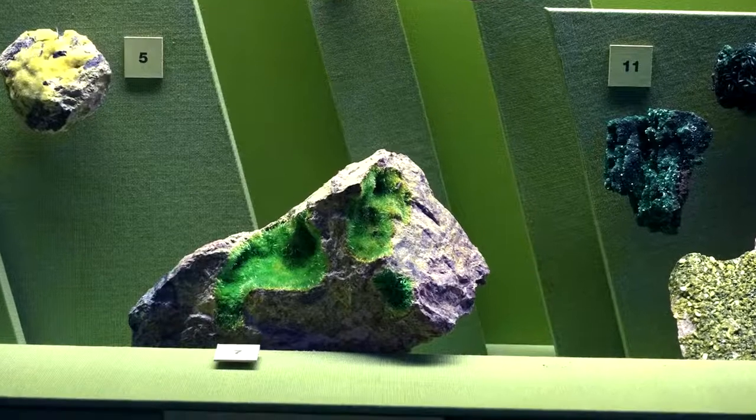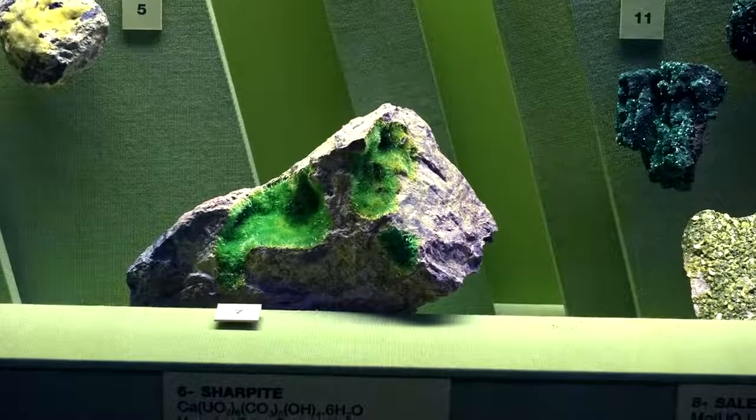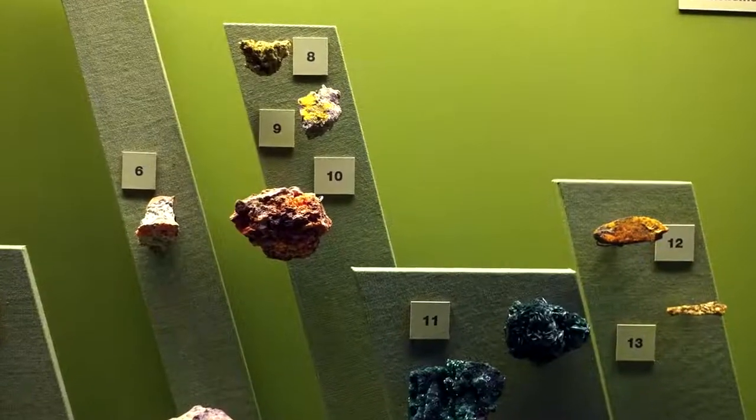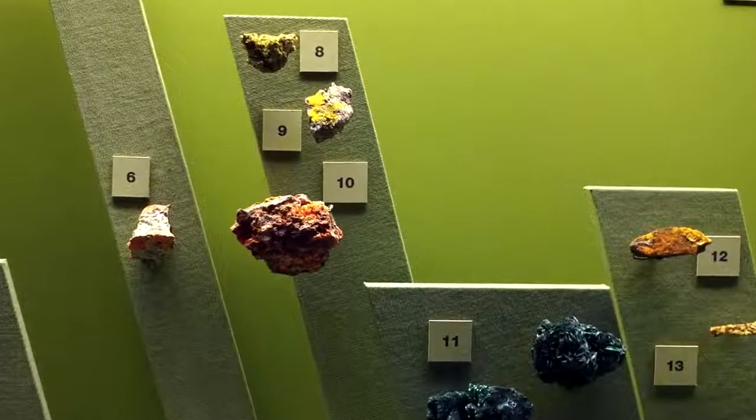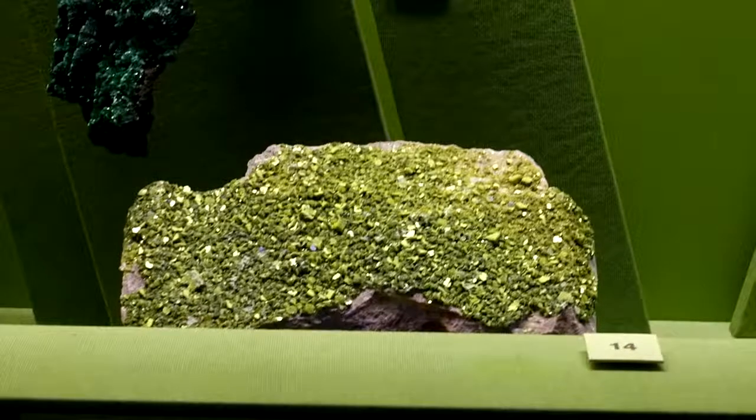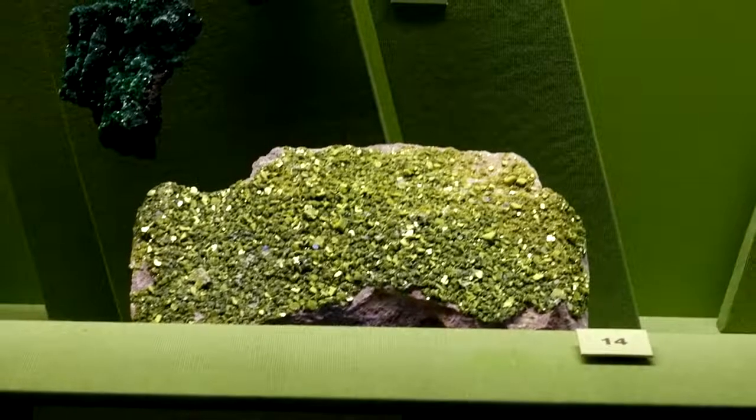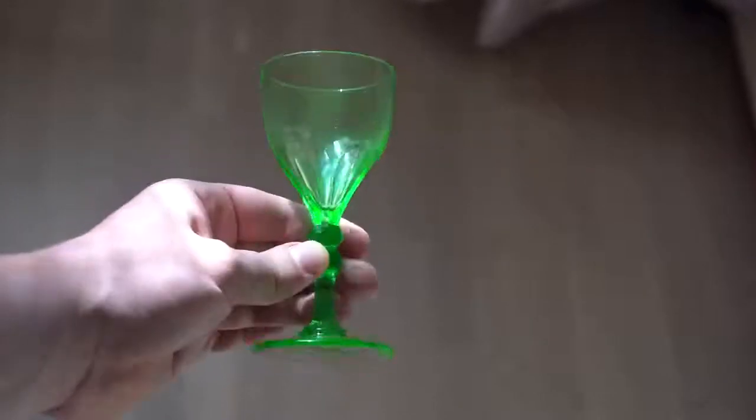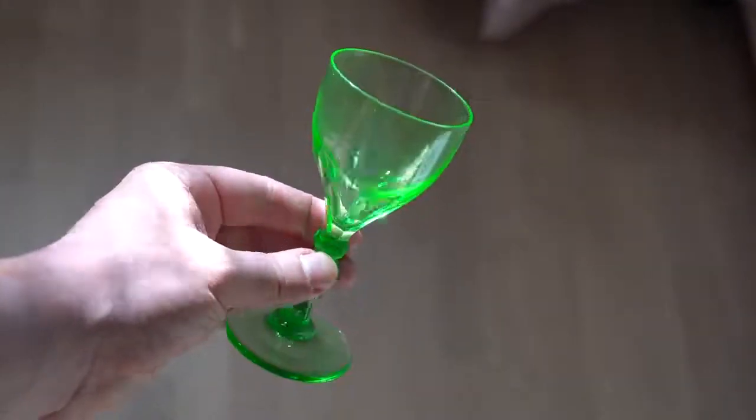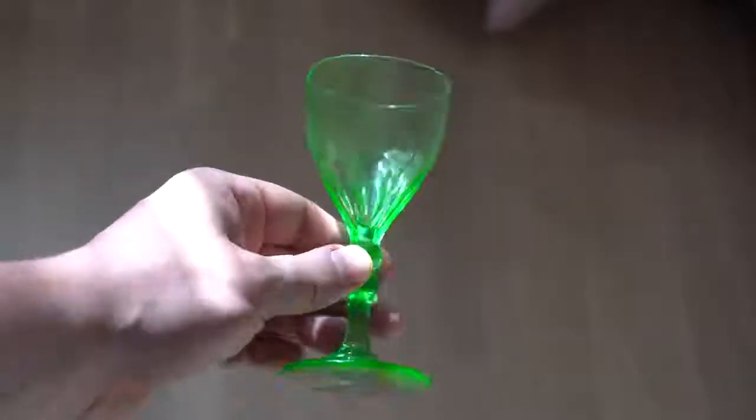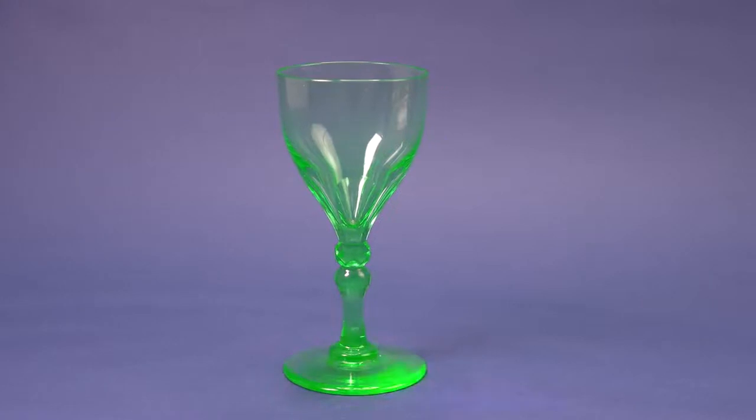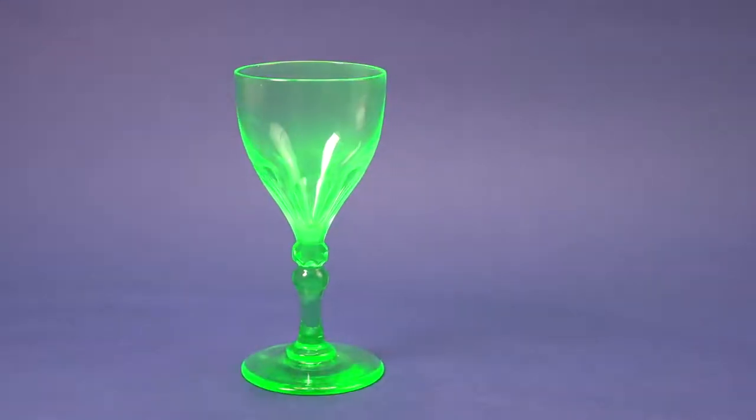In nature, uranium is often found in such minerals as uraninite and autunite. This metal often has several oxidation states in those minerals. Thanks to the beautiful yellow color of such minerals, glass blowers added them to glass. As a result, minerals would give glass a beautiful greenish color. It's a pity that back then craftsmen did not know about the toxicity of uranium compounds.